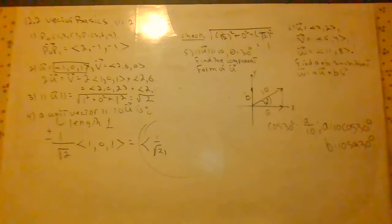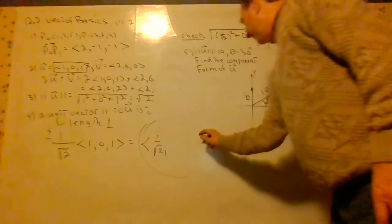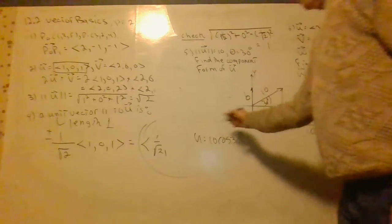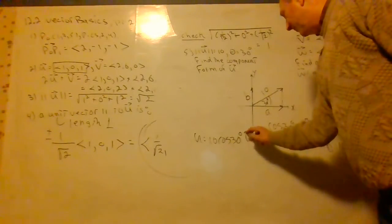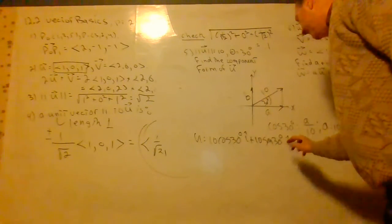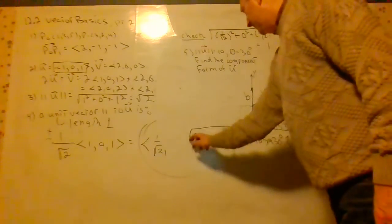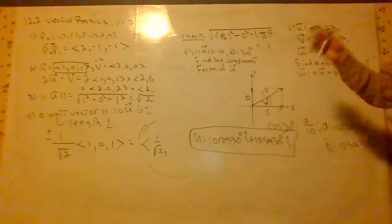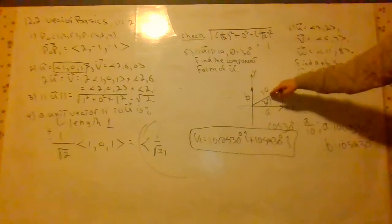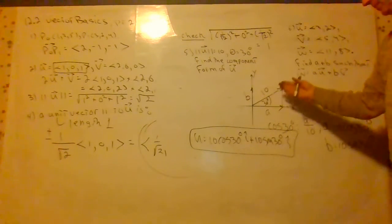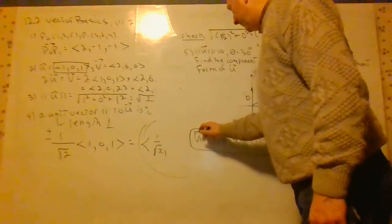This b is the same as this b over here. So the component form of u is equal to 10 cosine 30. You can use pointy brackets or you can use the i hat if you want. 10 sine 30 j. Yeah, that's how in physics you do this so much that it becomes second nature. You resolve this into two directions for a higher purpose. There's all sorts of problems you can solve in Newtonian mechanics using equilibrium, et cetera. And that's how you do that.